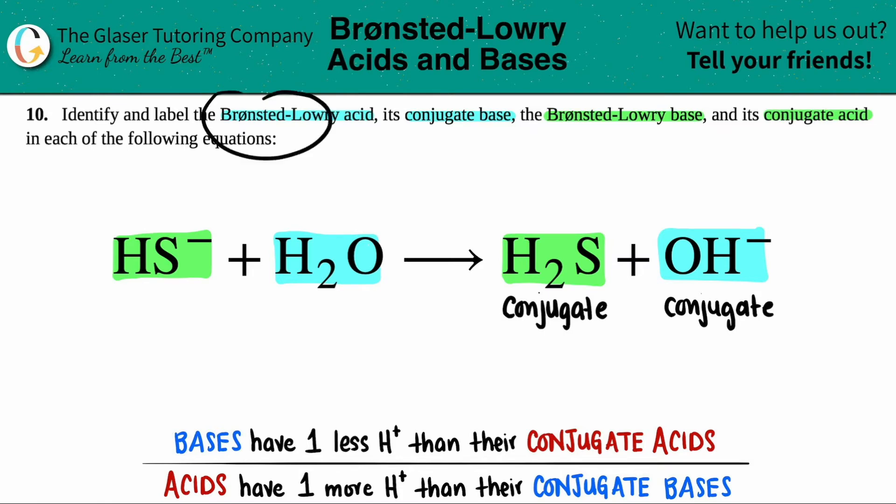And for Bronsted-Lowry, the Bronsted-Lowry acids or bases, that's what you are reacting with. So HS minus has to be a Bronsted-Lowry acid or base, and then H2O has to be a Bronsted-Lowry acid or base. Now we're going to figure out which one is actually the acid or which one is the base. Now pick a pair. It does not matter which pair you pick. I guess I'll pick the HS minus with the H2S.